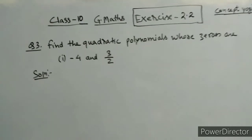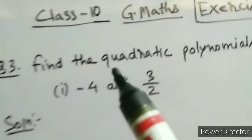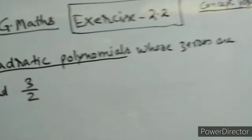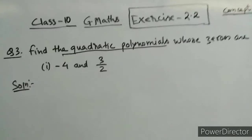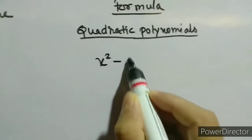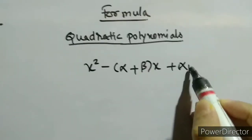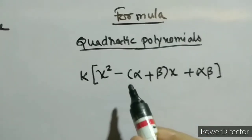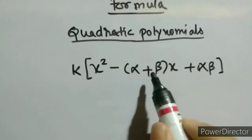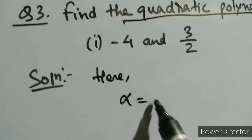In this video we will solve class 10 maths Exercise 2.2, Question 3, parts 1 and 2: find the quadratic polynomial whose zeros are given. To solve this question we will use the formula: x squared minus (alpha plus beta) times x plus alpha times beta, multiplied by k. Alpha plus beta means sum of zeros and alpha times beta means product of zeros, where k is a constant.